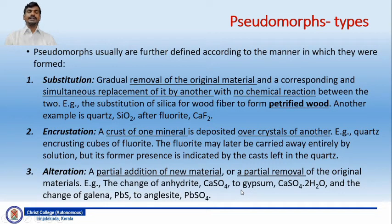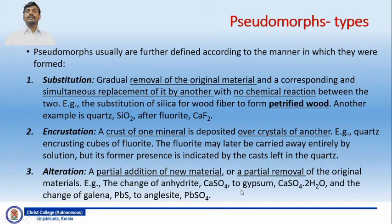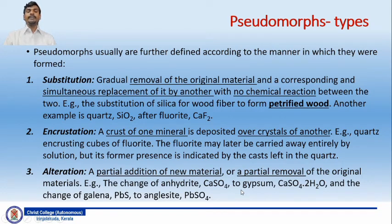A third type is alteration pseudomorphs, characterized by a partial addition of new material or a partial removal of the original material. An example is the change of anhydrite (CaSO₄) to gypsum (CaSO₄·2H₂O) by the addition of water molecules. Another example is the change of galena (PbS) to anglesite (PbSO₄). In these cases, a partial addition of new material or partial removal of the original material occurs.